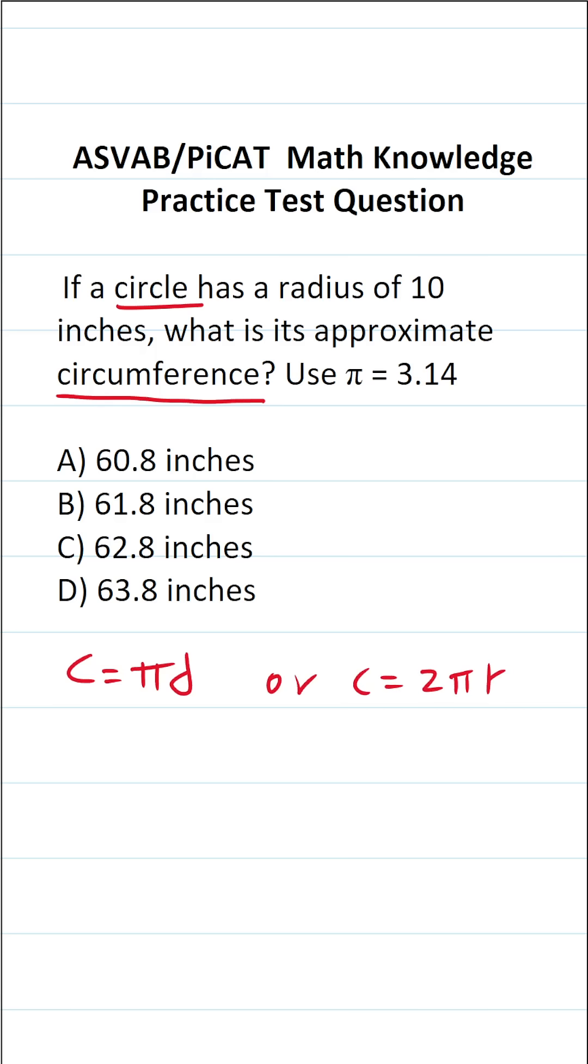Depending on the information you have in the problem, you're going to use either one or the other formula. In this case, we know the radius r is 10 inches, so that's going to prompt us to use this second formula. Circumference equals 2 pi r. We know r is 10, so let's plug that in.